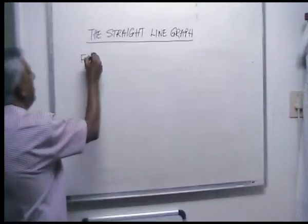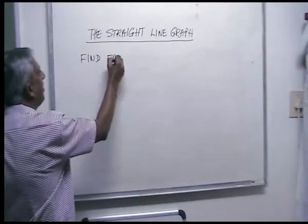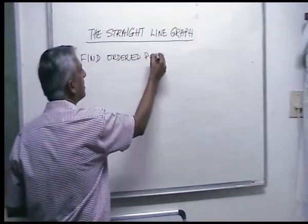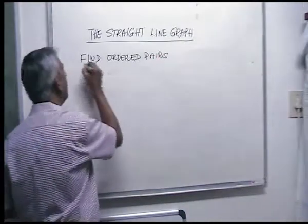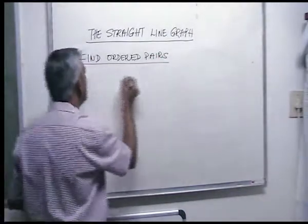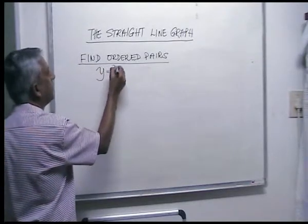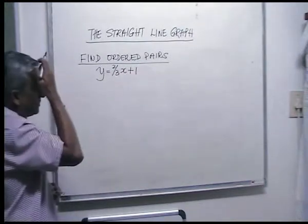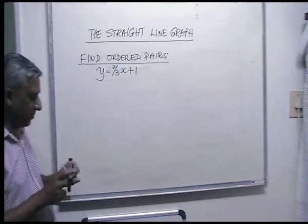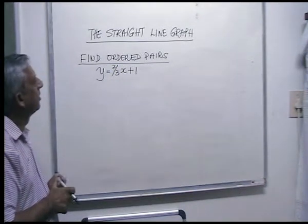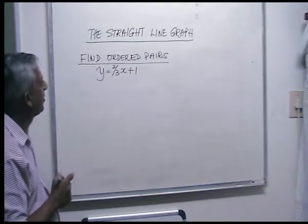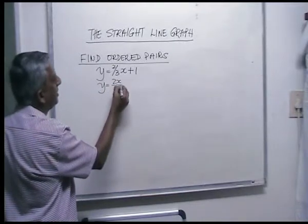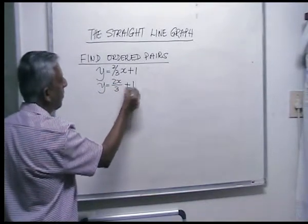Now I'm giving you an example where you find ordered pairs and the equation contains a fraction. Say the question is y is equal to two-thirds x plus one. That's really two x over three plus one. I know you can choose any number you like, but in an example like this where you have a denominator, our advice is to look at the denominator.